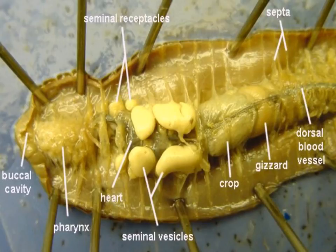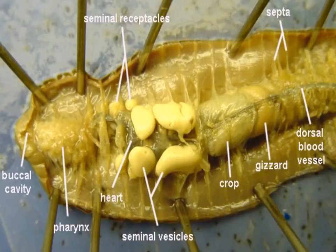The circulatory system of the earthworm is a closed circulatory system composed primarily of the dorsal and ventral blood vessels — here we can see the dorsal blood vessel. They are connected to one another by lateral vessels known as capillaries. The dorsal vessels carry the blood anteriorly, and the ventral blood vessels carry the blood posteriorly.